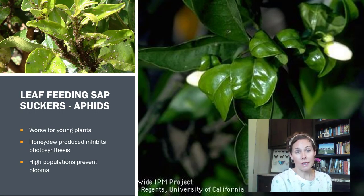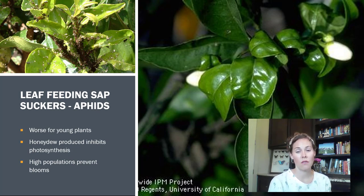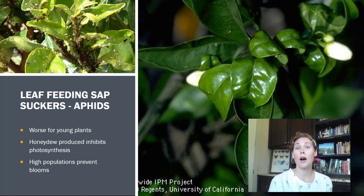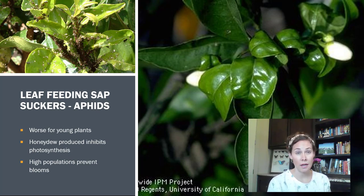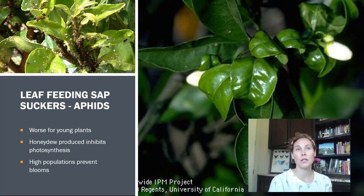In addition to chewing insects, we mainly see problems with sucking insects on citrus plants. There's a lot of juice flowing through these plants, which sucking insects love. Unfortunately, sap-sucking insects can reproduce very quickly and build up in gigantic numbers fast. On younger plants they become a bigger problem, while established plants can usually overcome the issues they cause. One thing they do besides draining plant vigor is produce honeydew, which turns into sooty mold that can inhibit photosynthesis. High populations can also prevent plants from blooming because the plant is suppressed under stress.